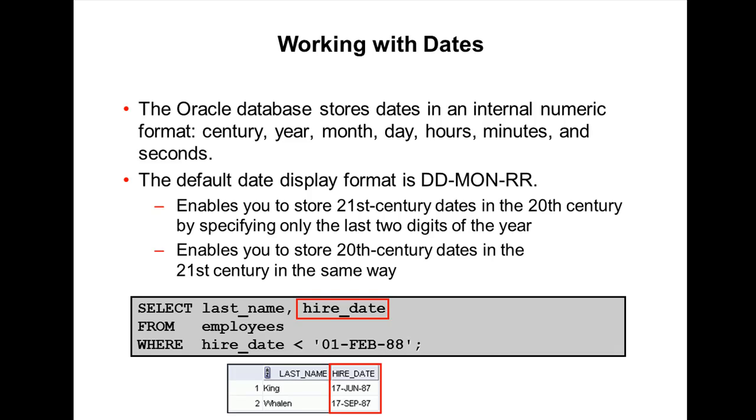And in this example, if you see the example shown in the slide, it's using the hire_date for employees. It displays in the default format DD-MON-RR. However, these dates are not stored in the database in this format. It may be something like date, month, year, century, hour, minute, second.